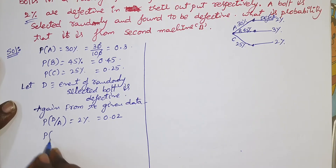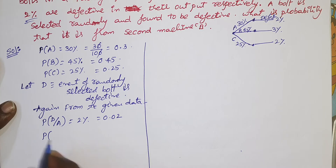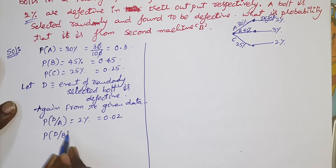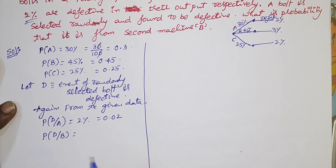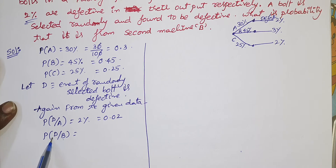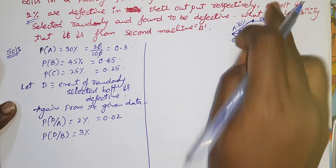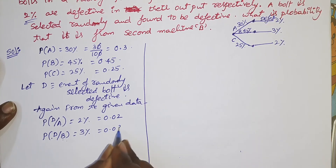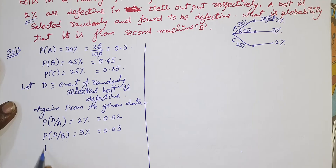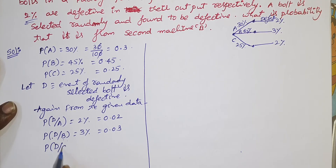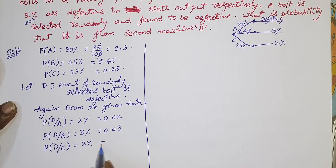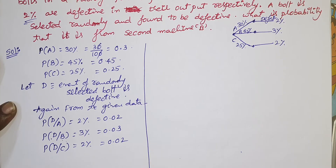The probability that a bolt is defective from machine B — P(D|B) — is 3%, which is 0.03. Similarly, probability of defective from machine C, P(D|C), is given as 2%, which is 0.02.